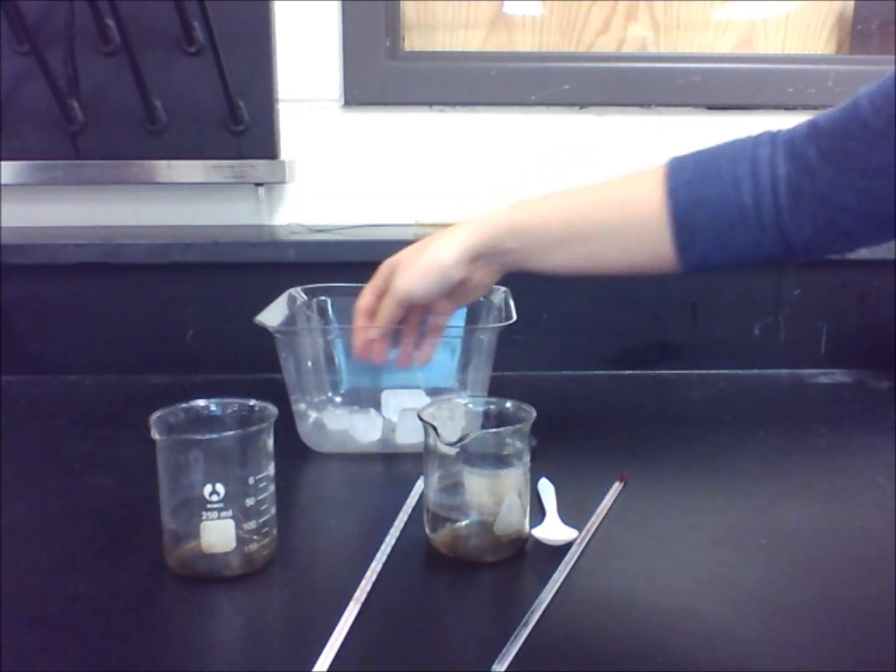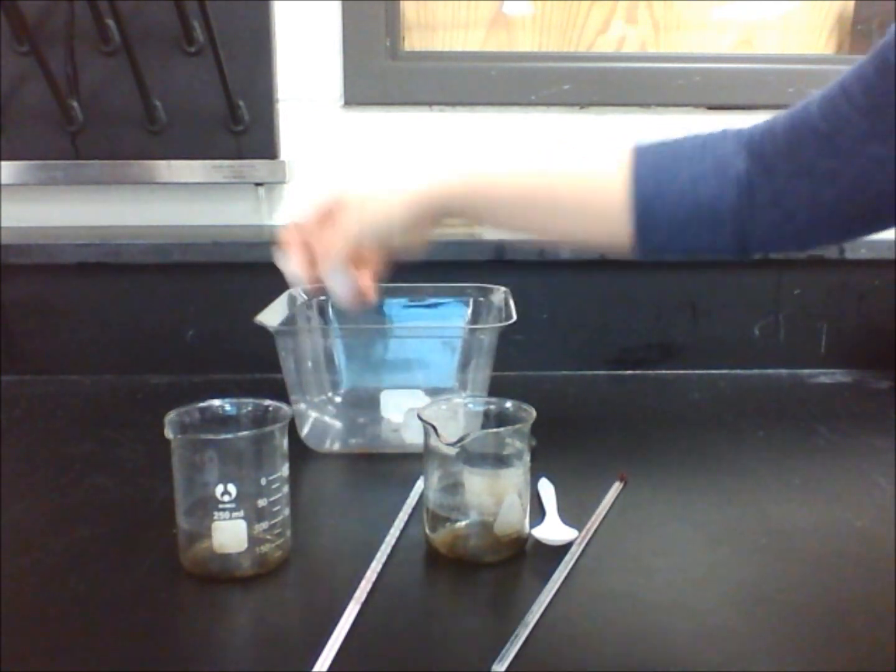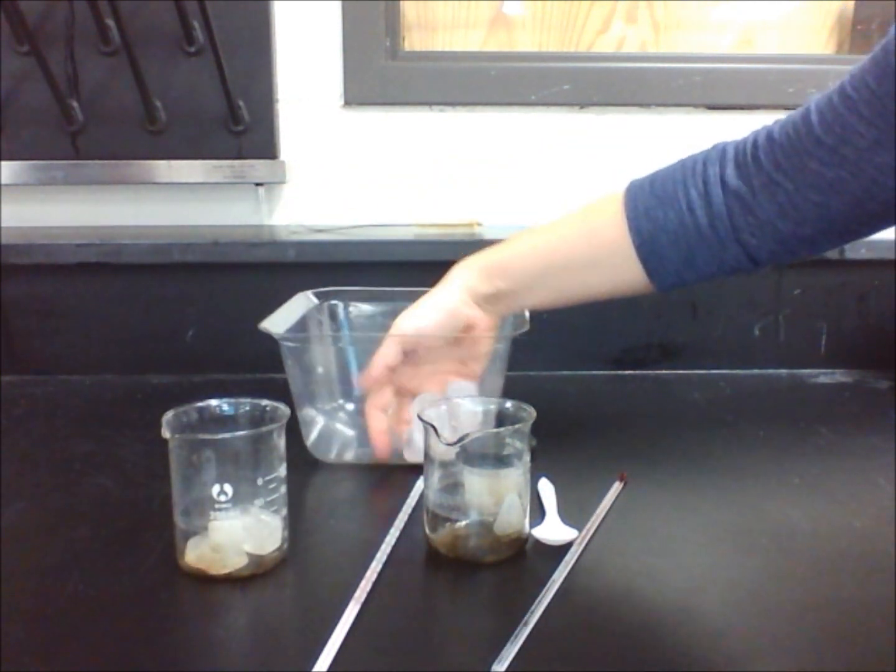First take two beakers and label one A and the other B. Fill both beakers with crushed ice until one third full.